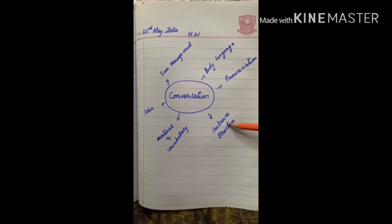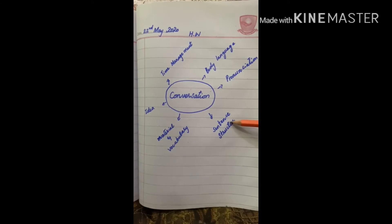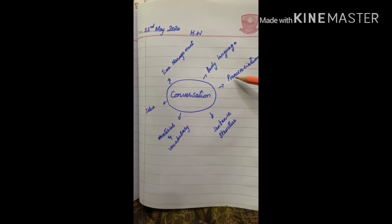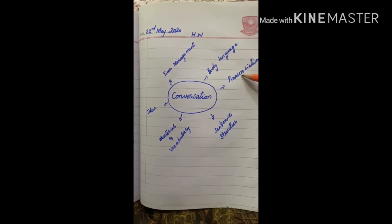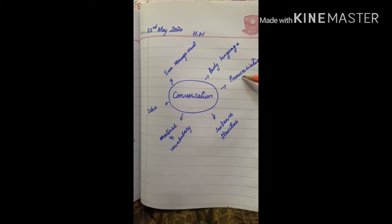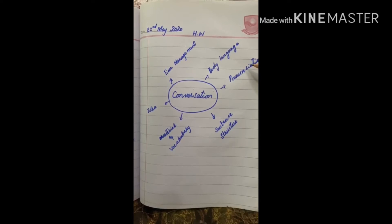While conversing, one should use proper sentence structure and follow the correct grammatical rules of the language. Then comes pronunciation - the pronunciation of words should be accurate. To improve pronunciation, one should listen to native speakers. It will help a lot to improve the pronunciation of the second language.